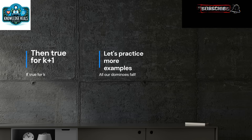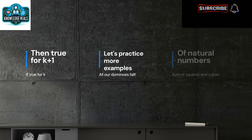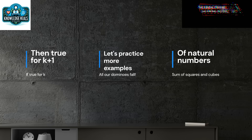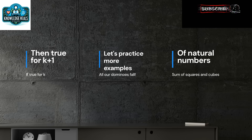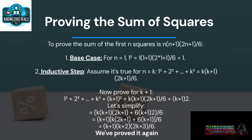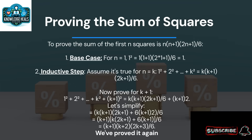Let's practice a few more examples together to solidify our understanding. We'll look at the sum of squares and cubes of natural numbers. Remember, the steps are always the same: prove the base case, then the inductive step. To prove the sum of the first n squares is n(n+1)(2n+1)/6.